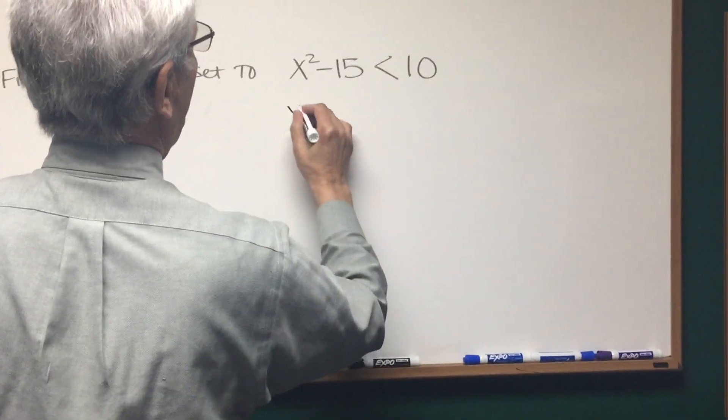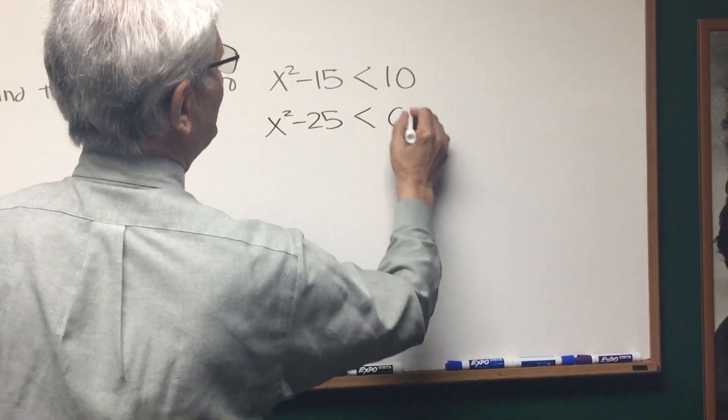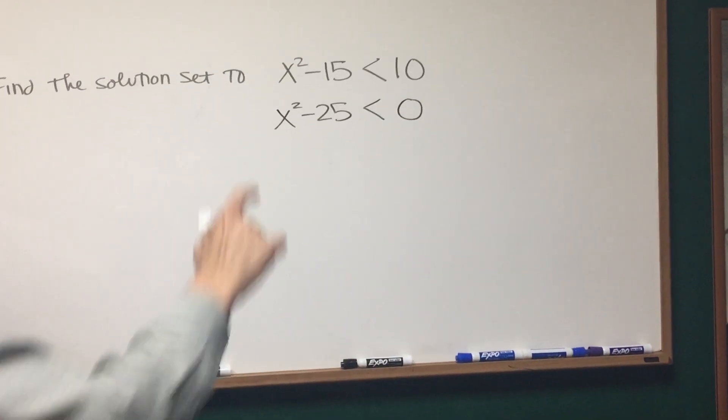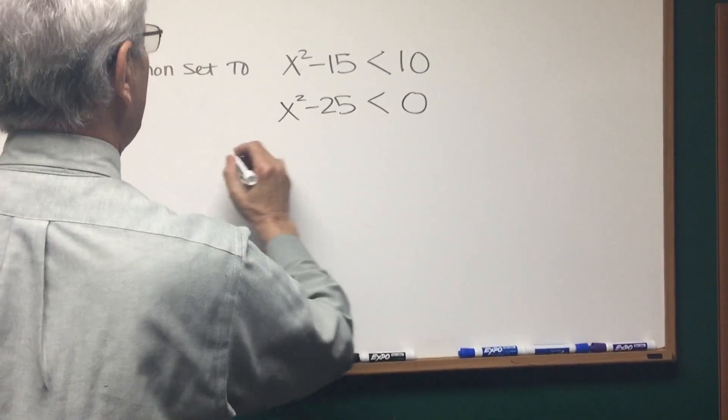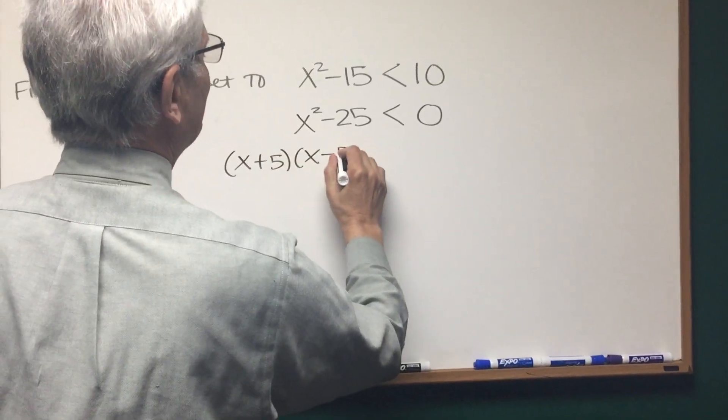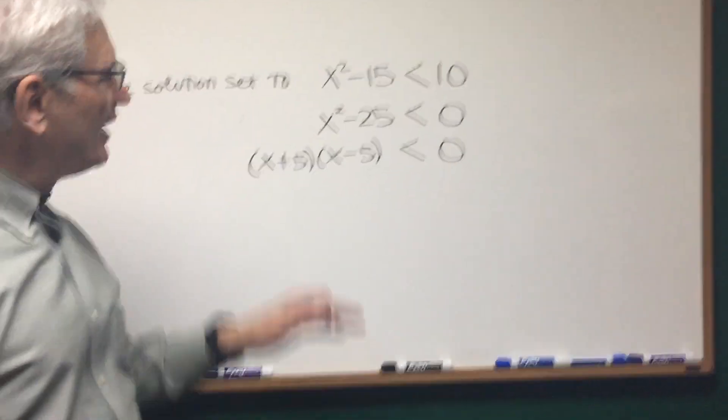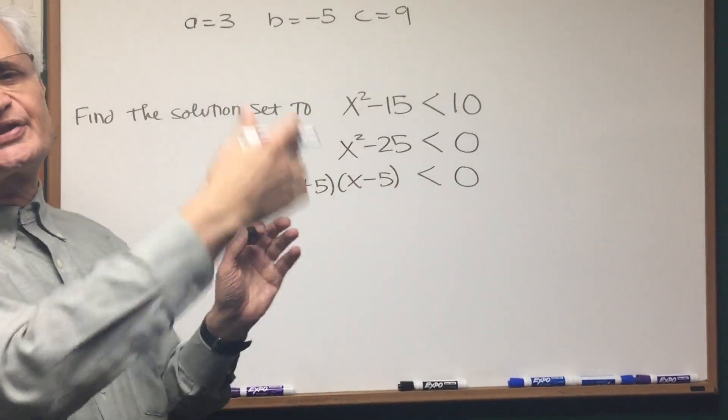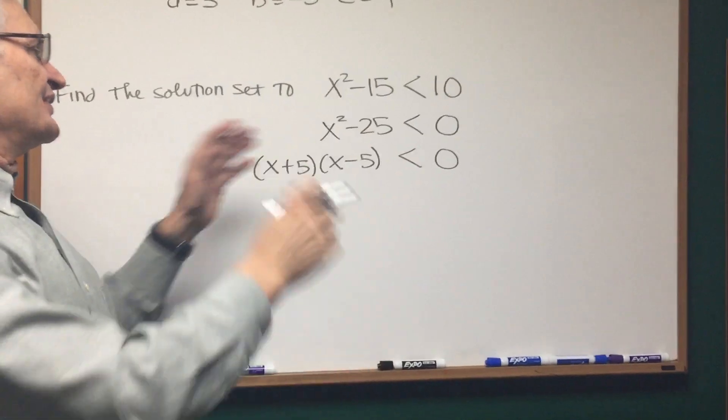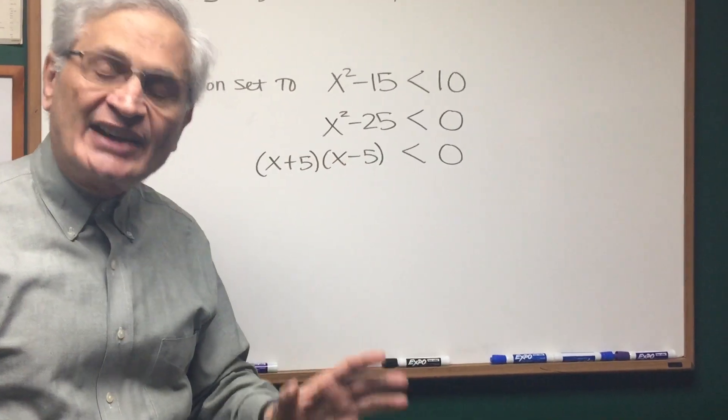We subtract 10 from each side and we get x² - 25 < 0, and then we see this is the difference of two squares, so this is going to be (x + 5)(x - 5) < 0. Now, one standard way of solving this problem is to set up a table with intervals less than -5, between -5 and 5, and greater than 5. Let's dispense with that.